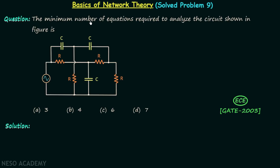The minimum number of equations required to analyze the circuit shown in the figure is... We have one network given in the question and we are required to find the minimum number of equations to perform the analysis of this network.